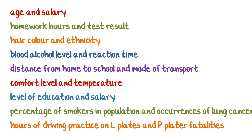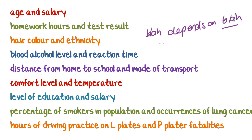Here are a few examples. We'll run through saying the sentence 'blank depends on blank,' replacing the variables, to see if it makes sense. 'Age depends on salary' — does how old you are depend on how much money you make? That does not make sense. But 'salary depends on age' — the younger you are the less money you make, the older you are the more you make — that could make sense. So salary is the dependent variable and age is the independent variable.